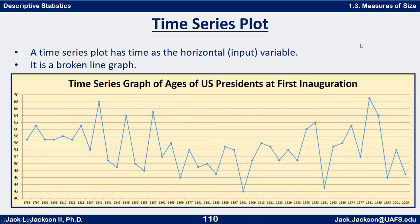Very quickly, one more type of graph: a time series plot. A time series plot has time as the horizontal or input variable. Here we have the year horizontally, and vertically whatever we're measuring. In this case, we're looking at the ages of U.S. presidents at first inauguration through time, from Washington through Obama, and we look to see if there's any particular pattern.